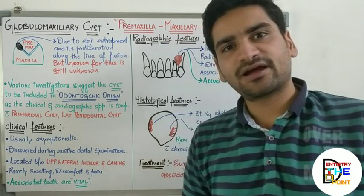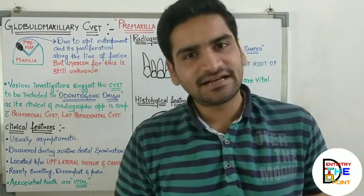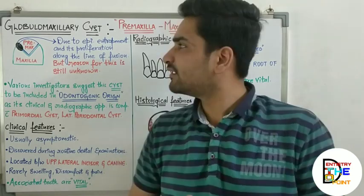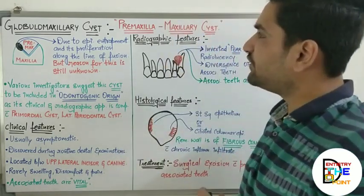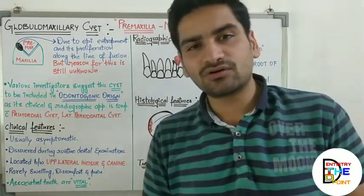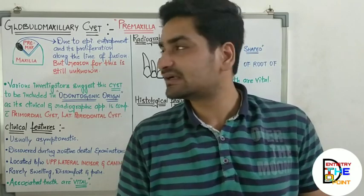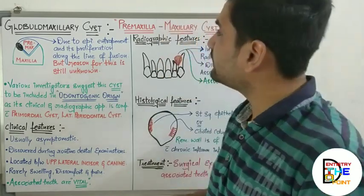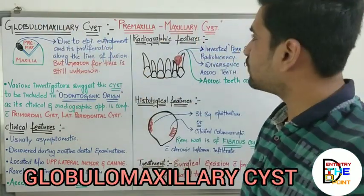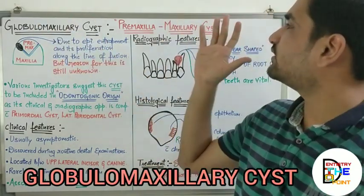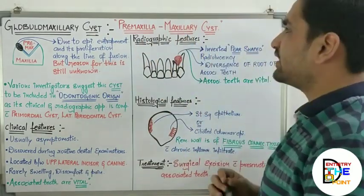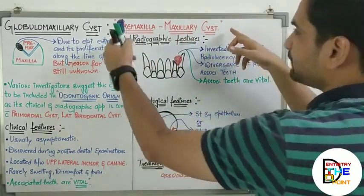Hi everyone, welcome back to our channel Dentistry to the Point. This is Dr. Dhrumal Manik. In this video we're going to discuss the second non-odontogenic cyst of developmental origin, that is the globulomaxillary cyst, also called the premaxilla-maxillary cyst.